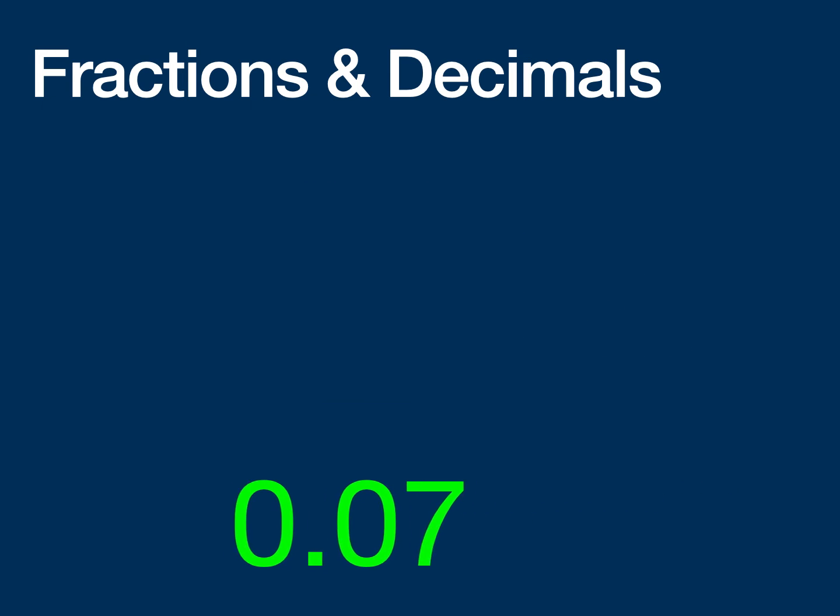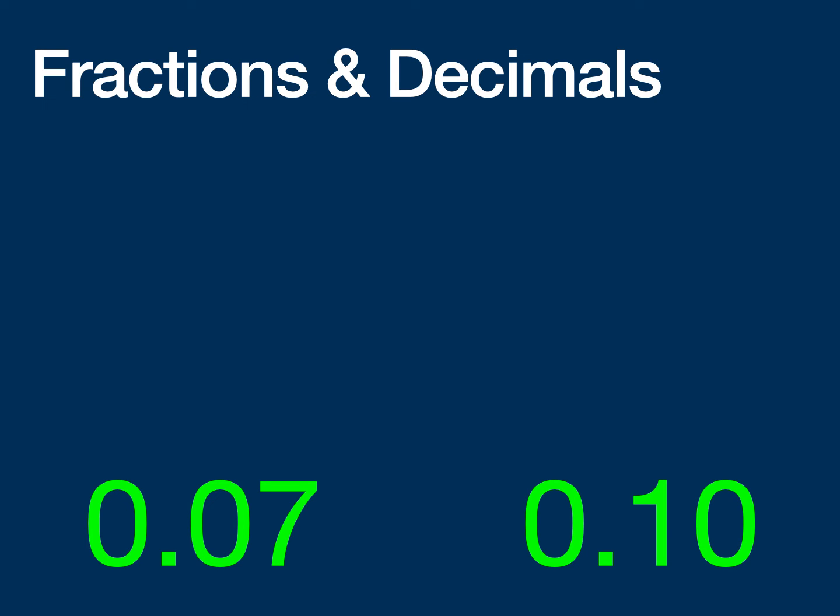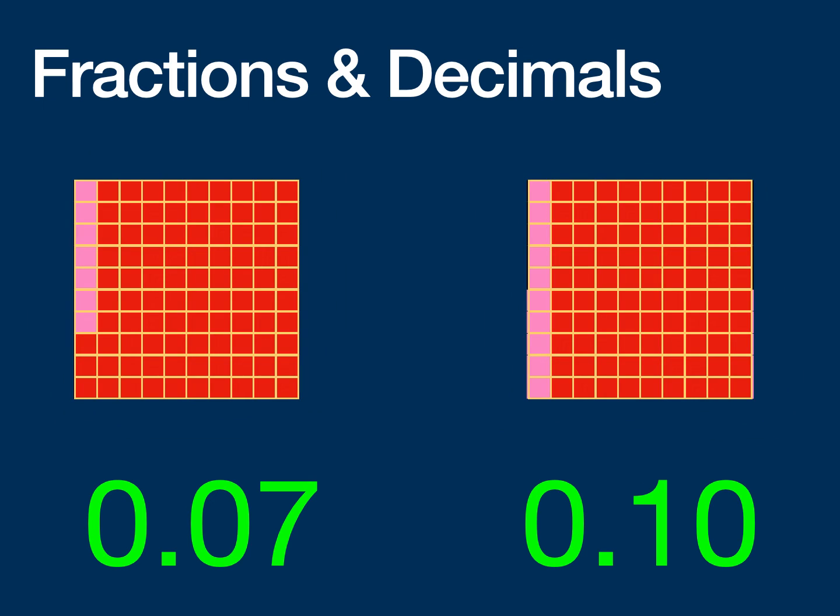Another one you got to be careful of, sometimes you may compare fractions and looking at these two fractions and say, oh, the one on the left, 0.07, that's higher because there's a 7 in there. And the one on the right only has a 1 and 7 is more than 1. But of course, when you look at these two in terms of what they represent, the one on the left is only 7 of the 100 squares. And the one on the right is 10 of the 100 squares. So you have to be careful. When you go to that hundredths decimal place, it's less than when you have a number in the 10th place.